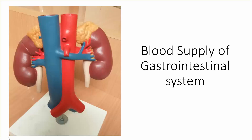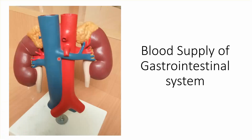Hello everyone, this is a short video about the blood supply of the gastrointestinal system. The abdominal aorta gives the celiac trunk at T12 level, the superior mesenteric at L1 level, and the inferior mesenteric at L3 level.